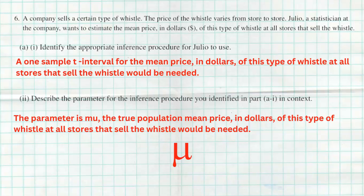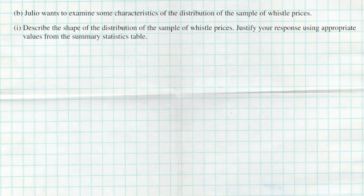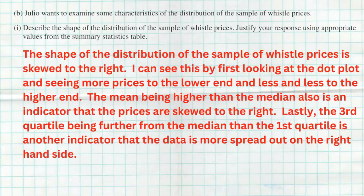Then he actually goes and gets a sample of 20 randomly selected stores. He called those stores and determines what is the price of the whistle at that store, and he makes a dot plot of those 20 prices from those 20 stores, and we even have the summary statistics: mean, standard deviation, and the five-number summary for that data. The first question says, describe the shape of the distribution of the sample of whistle prices and justify your response using appropriate values from the summary statistic table.